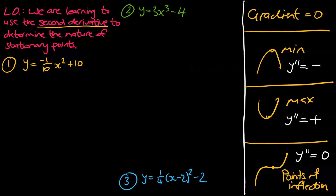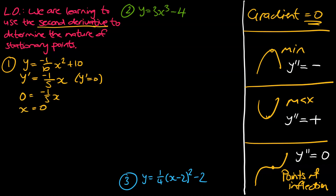Let's get back to the yellow pen. We still need to differentiate to find the stationary point. So that becomes negative one fifth — because negative one tenth times 2 is negative two tenths, which is negative one fifth — times x. We need to figure out what the x value is at the turning point. We know the gradient is equal to zero, so y dash equals zero, meaning x equals zero. Let's find the corresponding y value by substituting back into the original equation: negative one tenth times zero squared plus 10 equals 10. So our coordinate is (0, 10).